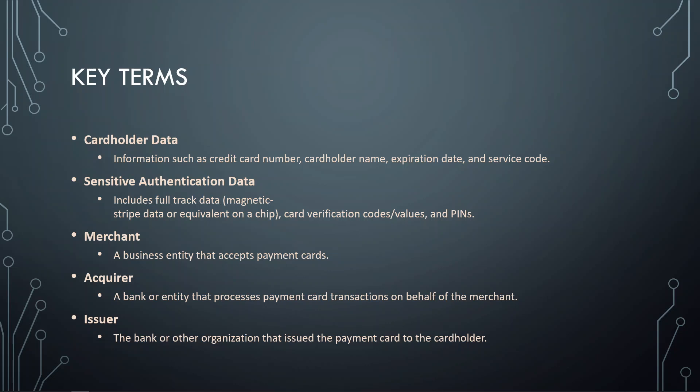Next is Sensitive Authentication Data, commonly known as SAD. This includes the full track data found in the magnetic strip or on the chip in modern credit cards. It also includes card verification codes and PINs. All of these fall under sensitive authentication data.